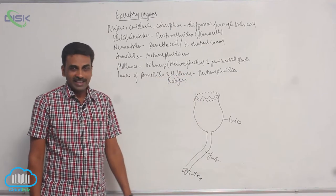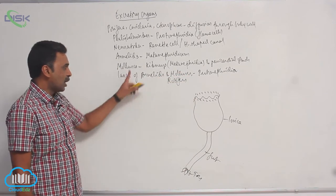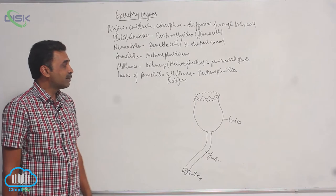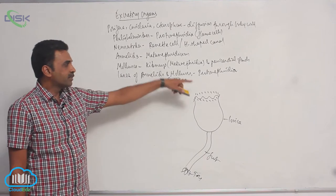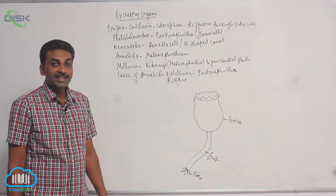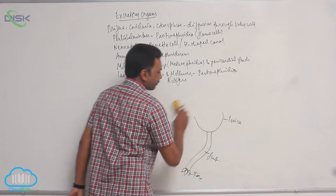The excretory organ in rotifers is protonephridia. So the larva of annelids, molluscs, and rotifers all have protonephridia as their excretory organs.